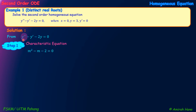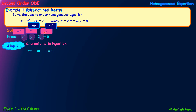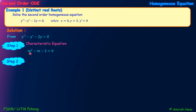How to find the characteristic equation: we replace Y double prime by M squared, Y prime by M (M to the power of 1), and Y by 1 (M to the power of 0). This gives us a quadratic equation because the highest power of M equals 2. After forming the characteristic equation, we need to solve the quadratic equation.